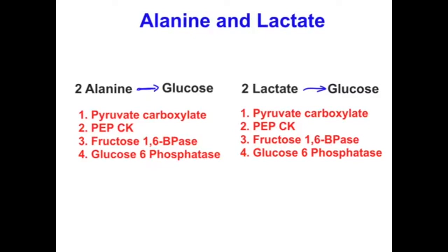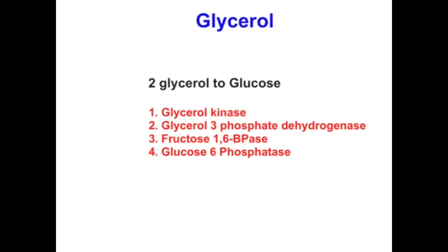Now, glycerol — coming from triacylglycerol breakdown. Two glycerol molecules can be converted into one glucose, since each glycerol has three carbons. First, glycerol is converted into glycerol-3-phosphate by the enzyme glycerol kinase. Then glycerol-3-phosphate is converted to dihydroxyacetone phosphate by glycerol-3-phosphate dehydrogenase — that enzyme is needed in the liver.